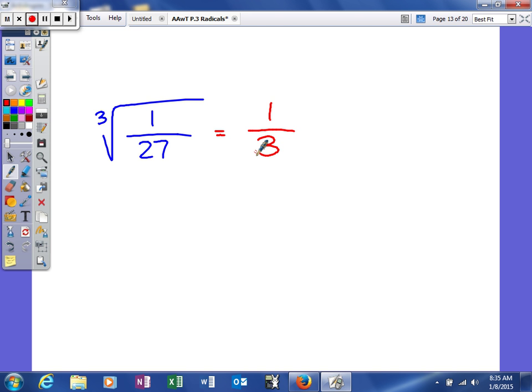So 1 third is the answer to that. 1 third times 1 third is 1 ninth. And then 1 ninth times 1 third will give us 1 over 27. So the cube root of 1 over 27 is 1 over 3.